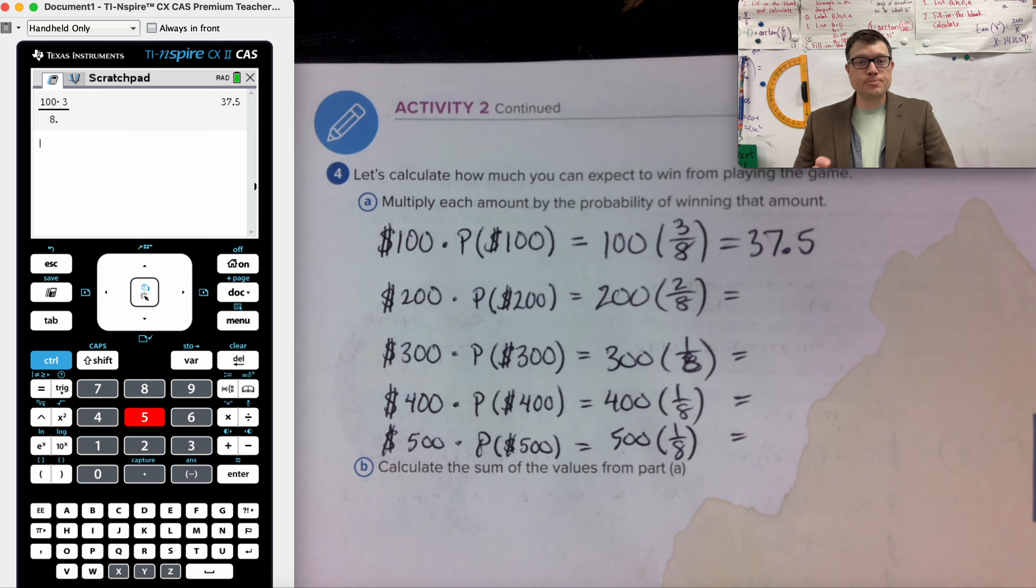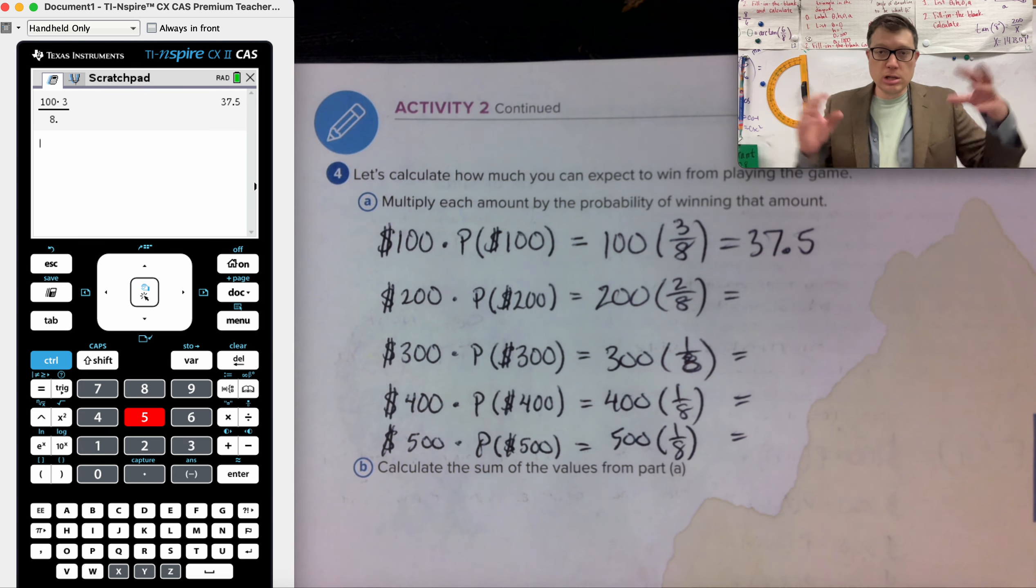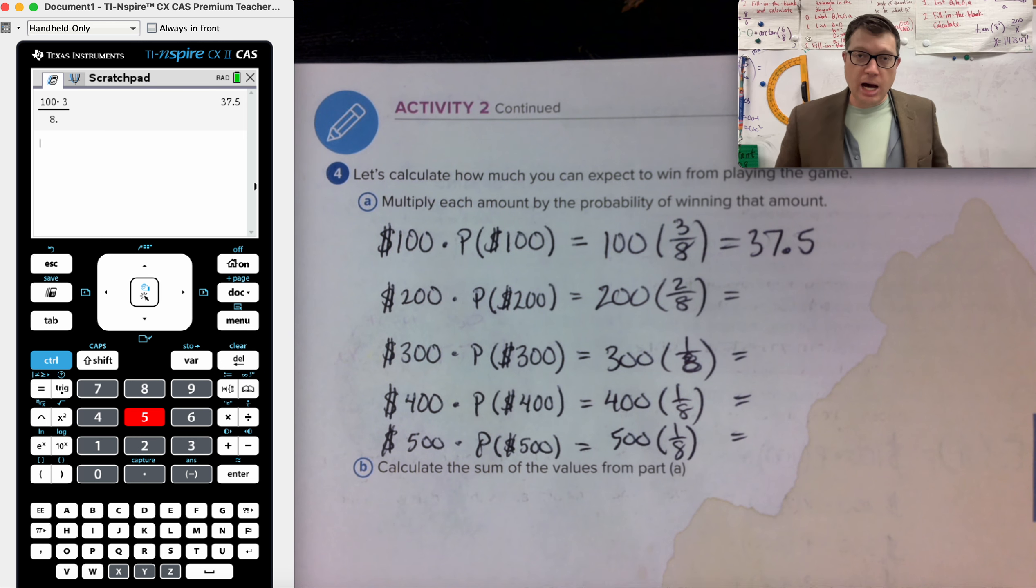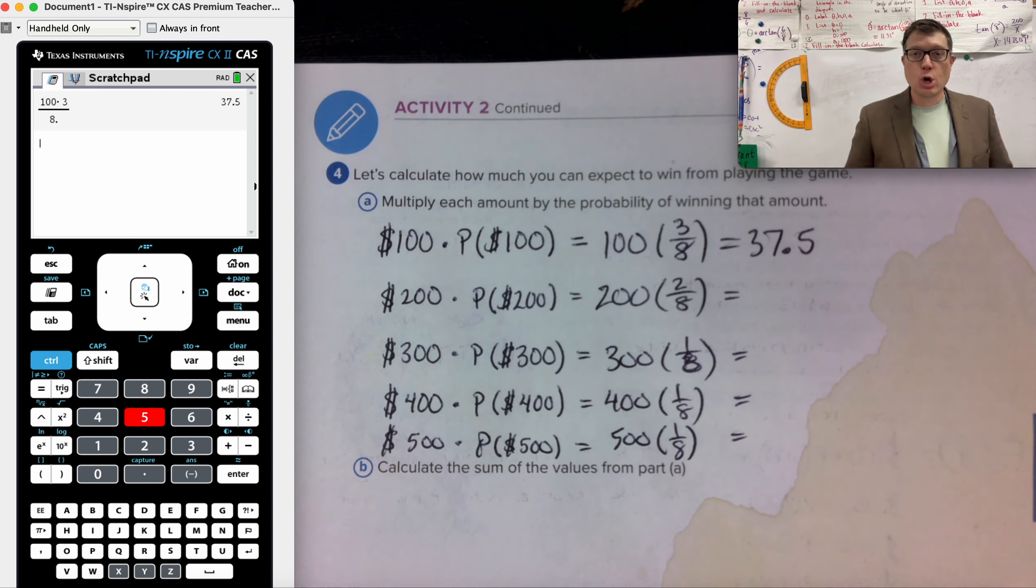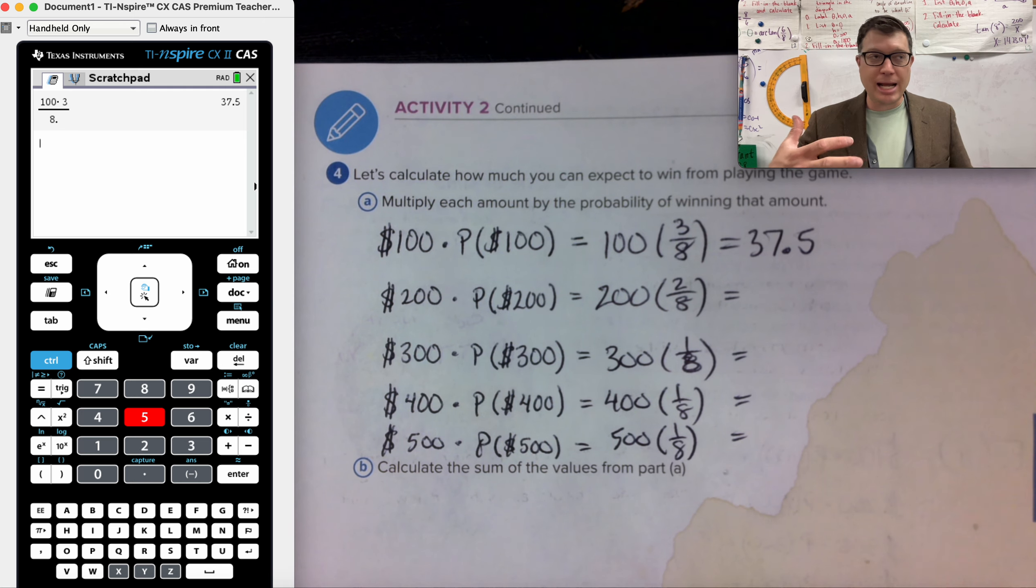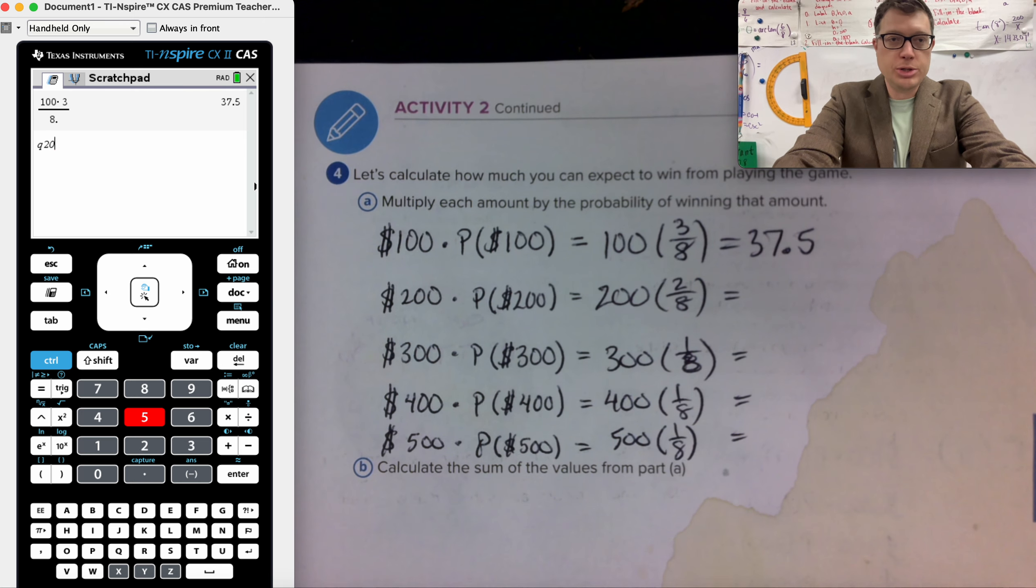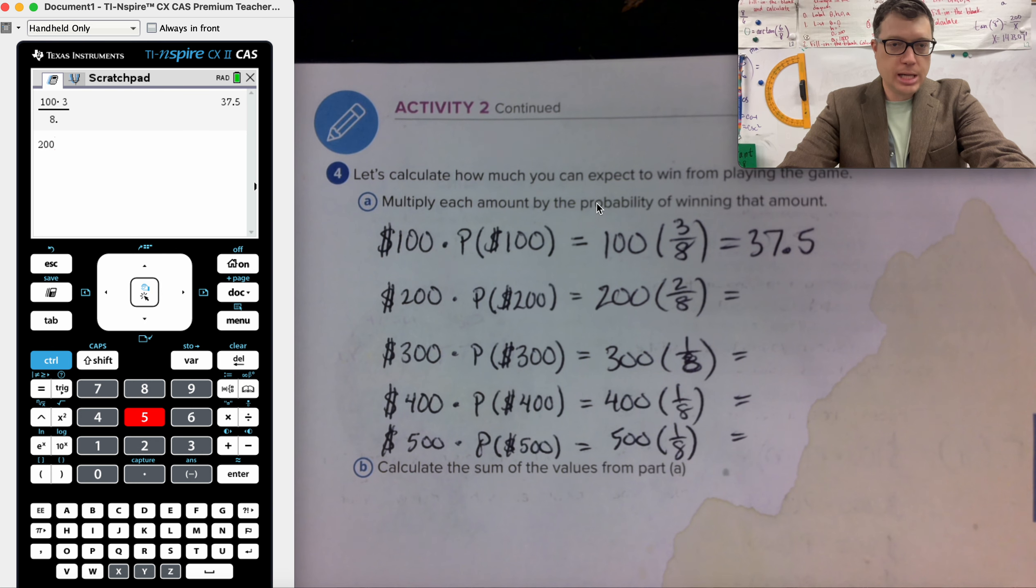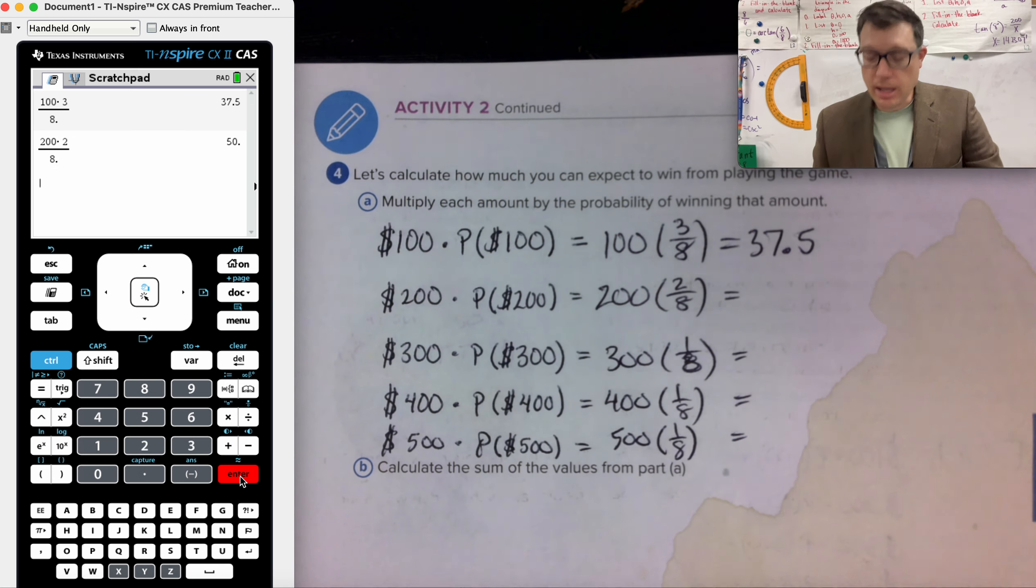On its own, that means nothing. Collectively, with all of the outcomes, with all of their individual probabilities multiplied by them, when we add up these numbers, we're going to get the average, like the expected amount of money everyone over time is going to have the chance to earn.